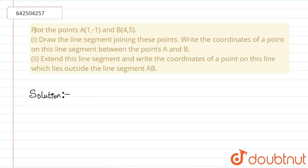Hello everyone. The problem says: plot the point A(1, -1) and B(4, 5). We are also asked to draw a line segment joining these points and write the coordinate of a point on this line segment between A and B. We also have to extend this line and write the coordinate of a point on the line which lies outside the line segment AB.